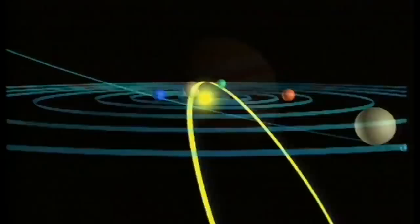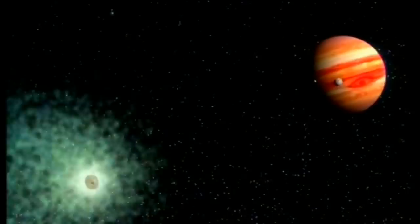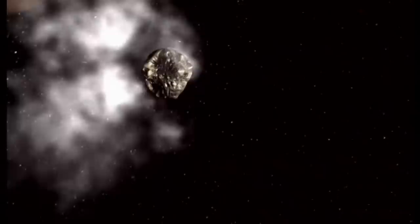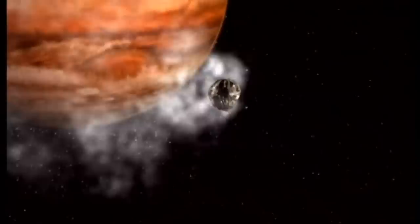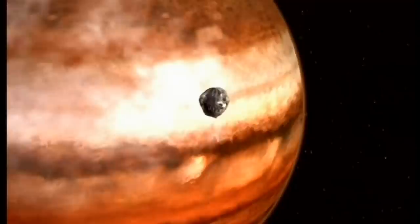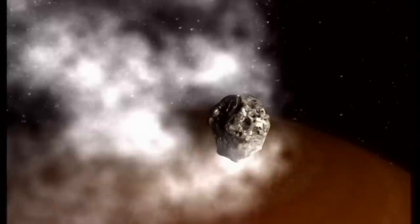Jupiter représente un véritable danger pour les comètes. Celle-ci est détournée de son orbite solaire puis capturée par l'attraction de la planète géante. La comète, fragile mélange de glace et de poussière, s'approche d'elle à moins de cinquante mille kilomètres. Elle empêche.